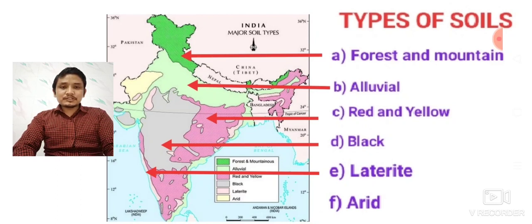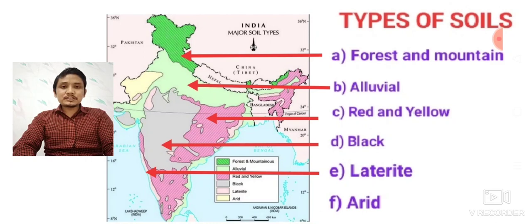Black soil is found mostly in Maharashtra, the Saurashtra region of Gujarat, that means southern Gujarat, and also Chhattisgarh. Laterite soil is found in Kerala, Tamil Nadu, and Karnataka. The last type is arid soil, found mostly in the western Rajasthan area, which is a desert region.